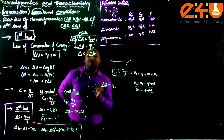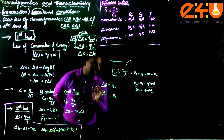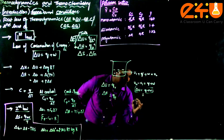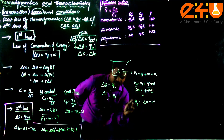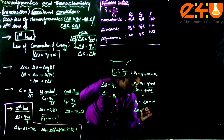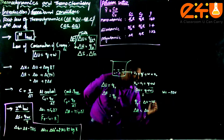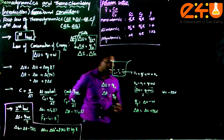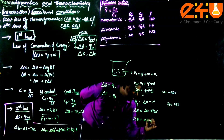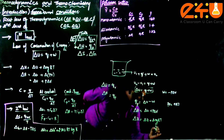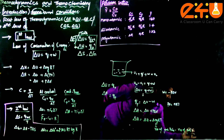At constant volume, ΔU = qv. At constant pressure, we use enthalpy ΔH. Starting from q = ΔU − w, substituting w = −pΔV gives ΔH = ΔU + pΔV. Since pV = nRT, this rearranges to the important formula: ΔH = ΔU + ΔngRT, where Δng is the number of moles of gaseous products minus gaseous reactants.